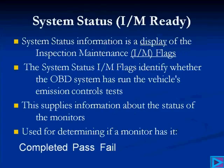System readiness status, the I&M readiness status, is information that's displayed for the inspection maintenance flags. The system status identifies whether the OBD2 system has run the vehicle's emission control test. This supplies information about the status of the monitors — you're going to use it to determine if the monitors have completed, have they passed, have they failed.